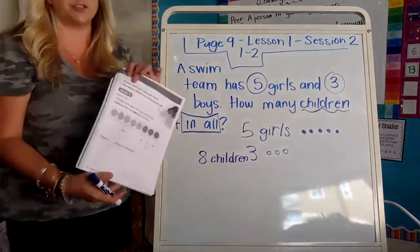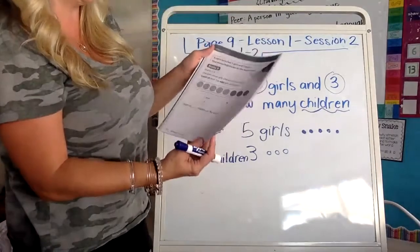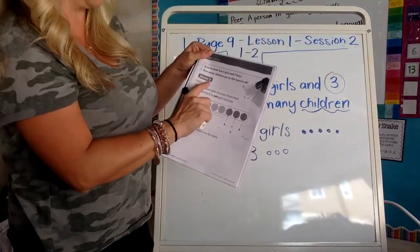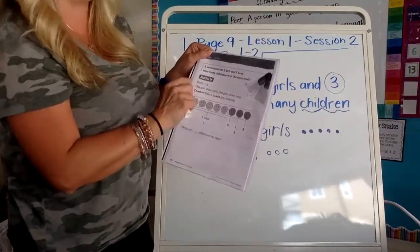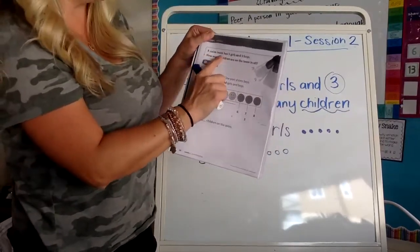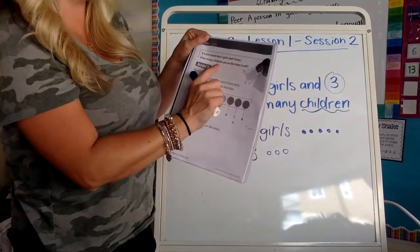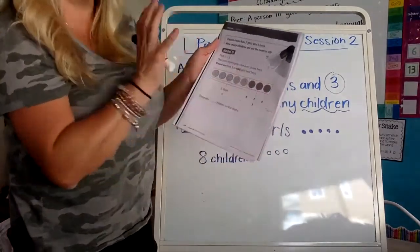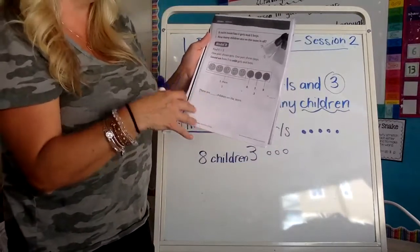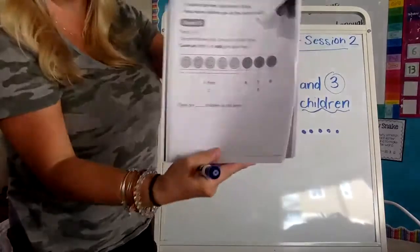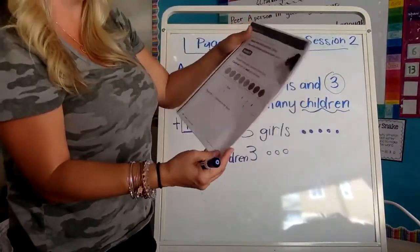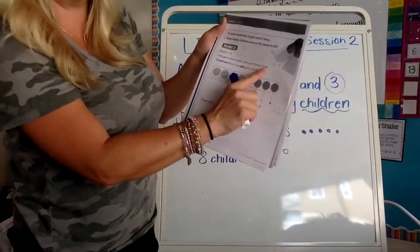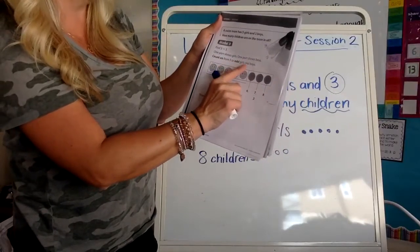If I turn the page, if I have a packet, I'm just going to flip it on over. And there's those flippers at the top. It repeats the problem. So we're going to show a model for this problem. And here it says model it. I believe if you have a workbook that's in green, a swim team has five girls and three boys. How many children are on the swim team in all? In all means I'm adding. So here's a model. A model is just a word for a drawing. So they're drawing it with smiley faces.